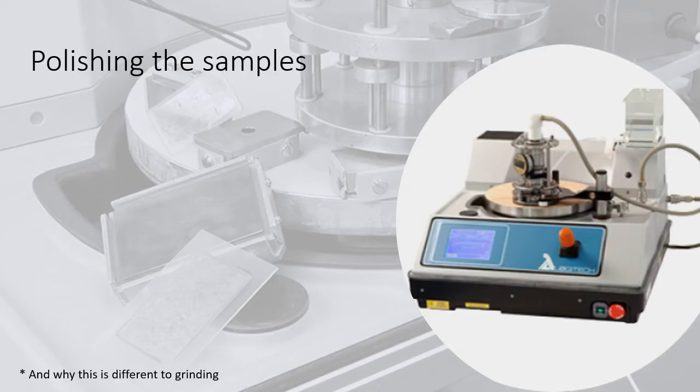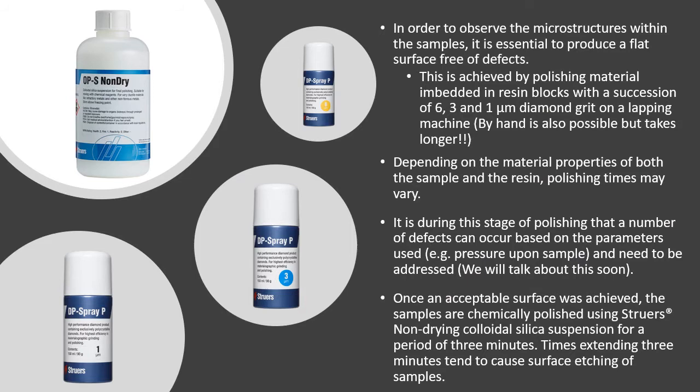So now we move on to polishing the samples. We use a polishing machine to polish our samples but this will also work with anybody who's working by hand. We use a diamond grit of 6, 3 and 1 micron working our way down finer and finer to polish our samples. This is followed by a non-drying colloidal silica suspension which gives us that final polish after one micron.